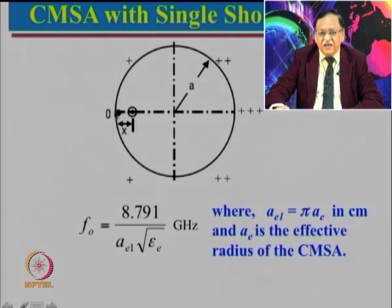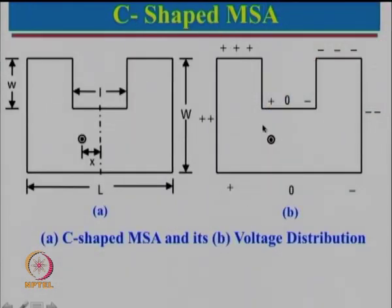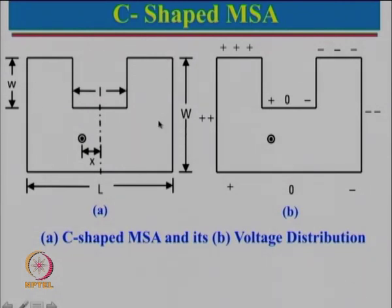Similarly, for a triangular microstrip antenna, the same logic applies: put a short and a feed point to obtain impedance matching. Now let us look at the next configuration — using slots in the rectangular patch antenna. This configuration looks like a U shape, but is popularly known as a C-shape antenna; you just have to rotate it 90 degrees.